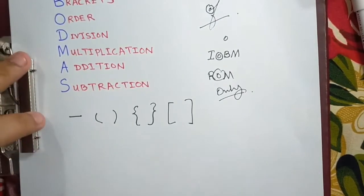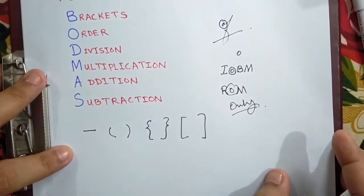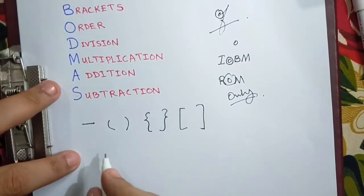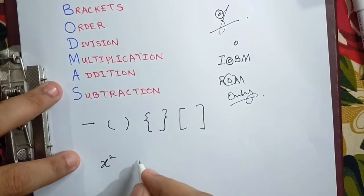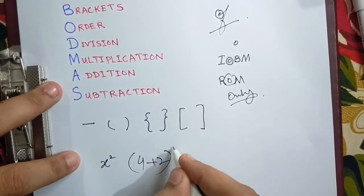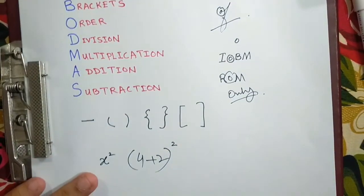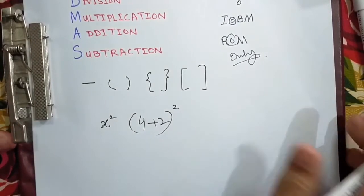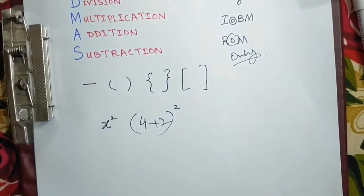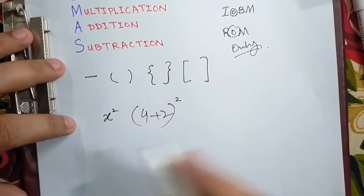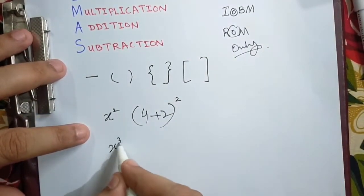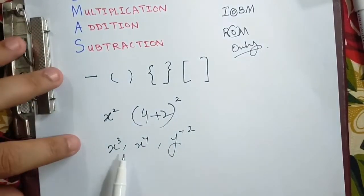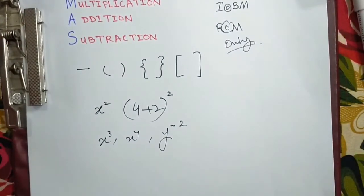Then comes order. Whenever there is power to, or any quantity or any number, this is known as order. The quantity is ordered, means there is power to. But if there is any power other than 2, or maybe 2, any power, any exponent, like there may be 3, there may be 4, there may be minus 2, so this is known as index. Whenever there is any power on any number, digit, or variable, or quantity, this is known as index.